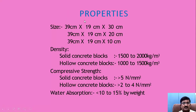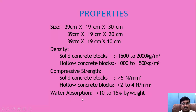Let us have a glance at the properties of these blocks. They are generally available in various sizes, but the most popular sizes are 39 cm × 19 cm × 30 cm, 39 cm × 19 cm × 20 cm, and 39 cm × 19 cm × 10 cm. Density for solid concrete blocks is 1500 to 2000 kg/m³; for hollow concrete blocks it is 1000 to 1500 kg/m³. Compressive strength of solid concrete block is greater than 5 N/mm²; hollow concrete blocks have 2 to 4 N/mm². Water absorption is less than 10 to 15% of the dry self-weight of the block.